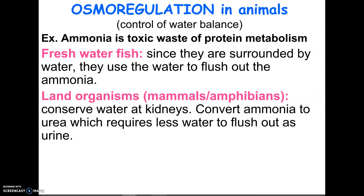We live on land and don't have a constant supply of water. We use energy to convert ammonia to something called urea — that's the stuff that makes your urine yellow, though your urine is mostly water. Urea is less toxic than ammonia, but it does take energy to make it. The benefit is we don't need a constant water supply — we can live with a lot less water in our diet because we convert ammonia to urea, which is less toxic, and then make urine as our waste product.